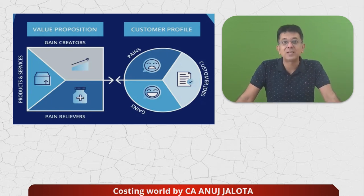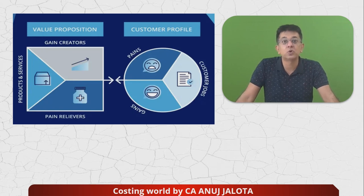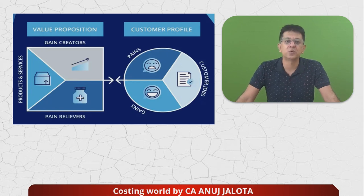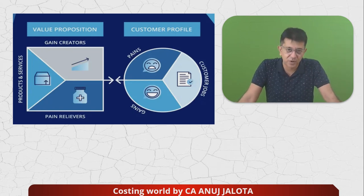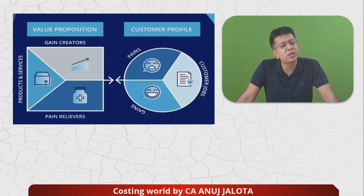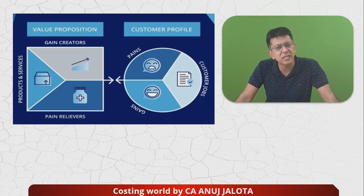Do remember: unless and until the customer profile matches with the value proposition, it is impossible to do any business. If you are going to be a CA, you cannot try to offer your services to someone who does not have taxable income or is not interested in your services. So if you want to do a business, you should always know who your customers are going to be. First address customer profile, then value proposition. There are three parts of customer profile.